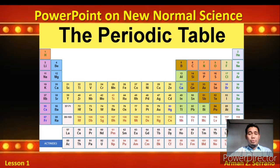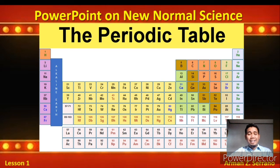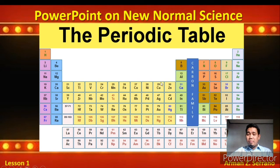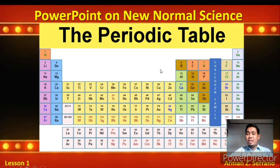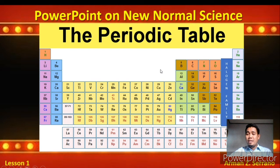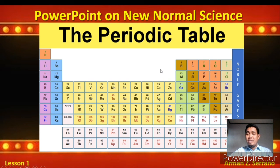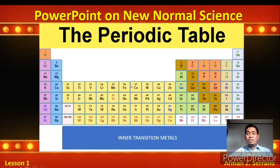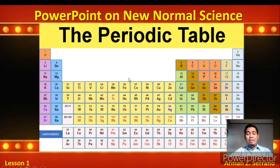Let's recap the different families or groups in the Periodic Table: alkali metals, alkaline earth metals, boron family, carbon family, nitrogen family, chalcogen family, halogen family, and noble gases. Then we have transition metals, inner transition metals, lanthanides, and actinides.